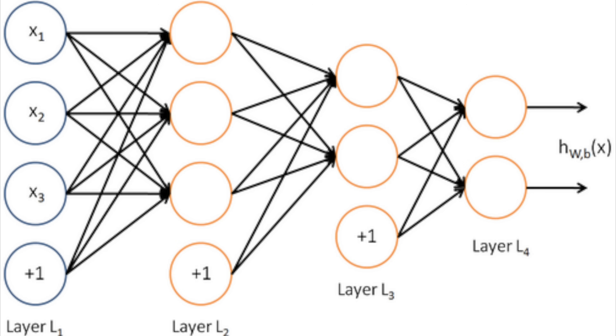A single neuron like this doesn't accomplish a whole lot, but when you link all of these neurons together, you get a neural network. And what's more important is that when you run a lot of training data on that model, all of those input knobs slowly get fine-tuned to the values that will make the AI good at predicting or understanding whatever data it is that you're feeding it.